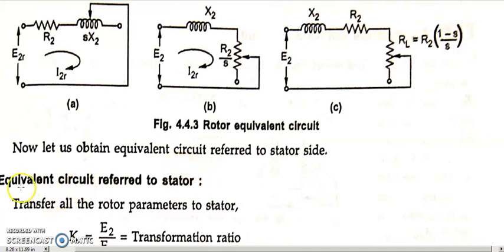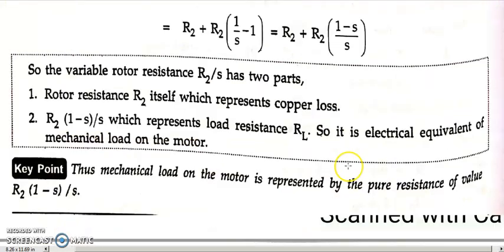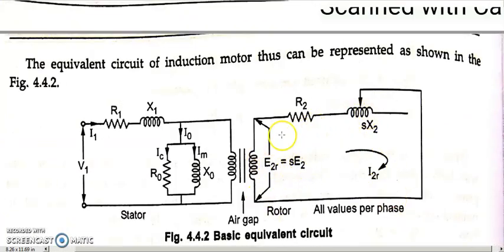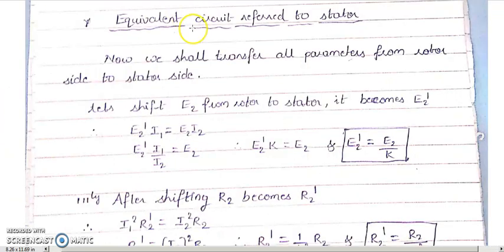Now let us start with the equivalent circuit referred to the stator. For that, we transfer all the rotor parameters to the stator side, because we are referring from the stator. So we are transferring all components — E2, R2, S·X2, I2R — everything from the rotor circuit into the primary stator circuit. It will be better to start understanding from here.